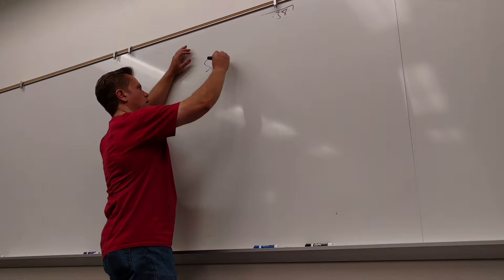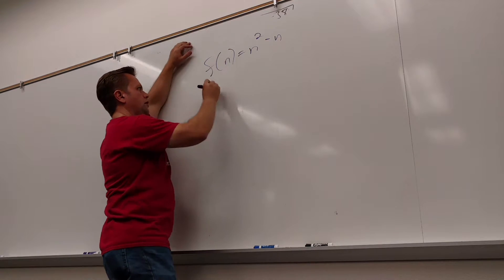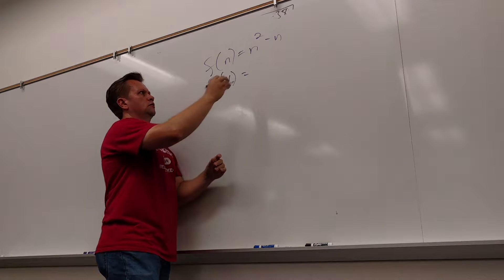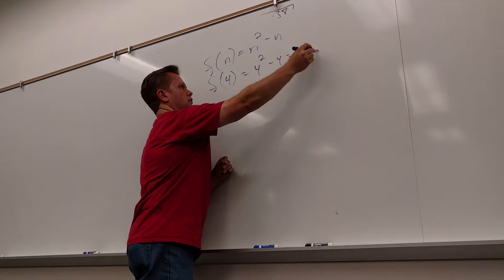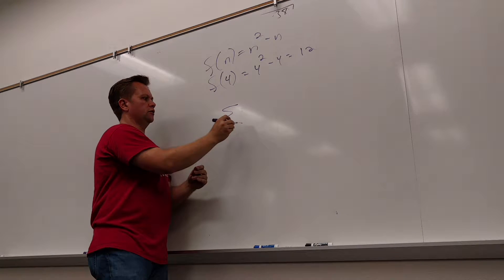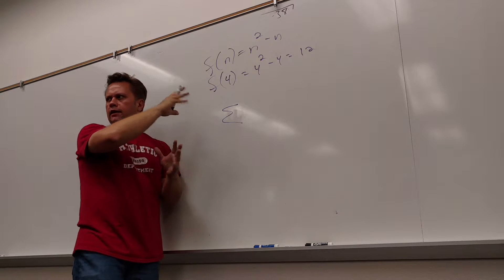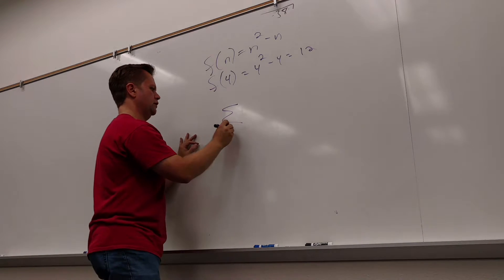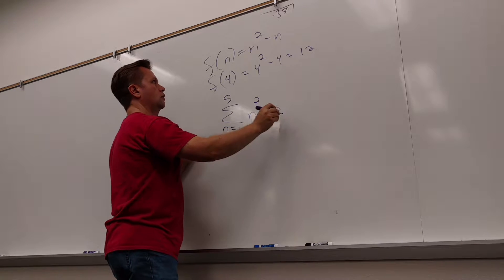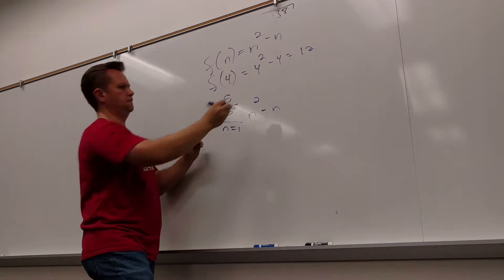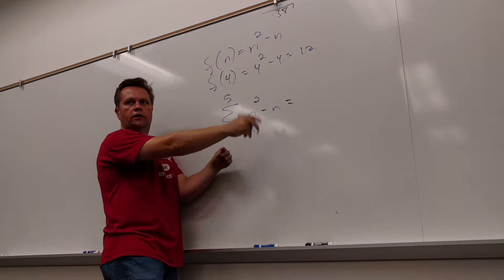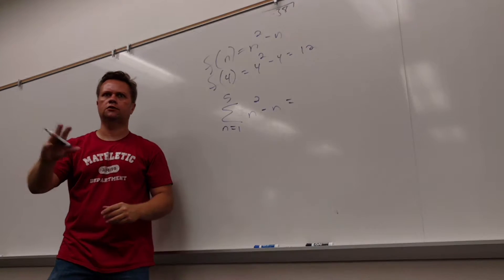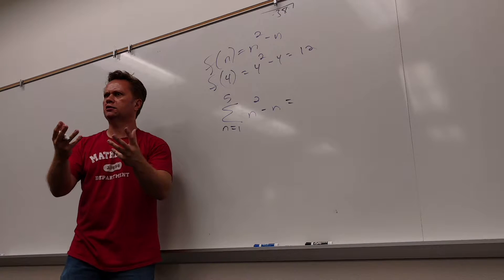If I said f of n equals n squared minus n, what would f of 4 be? Yeah — 4 squared minus 4. So the difference between sigma notation and function notation is not as big as you first think. On this problem, I said go from n equals 1 to 5. You just plug 1 through 5 in — that's it. You do f of 1 plus f of 2 and so on. Function notation is just so beautiful.